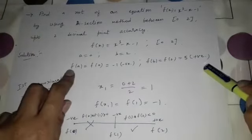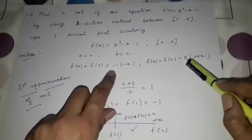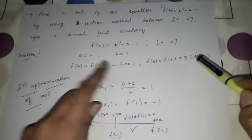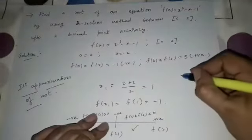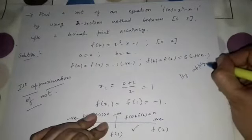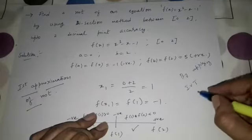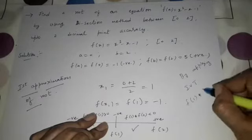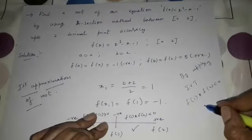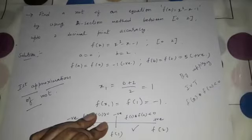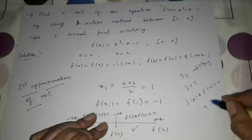f(2) = 5, which is positive. Applying the intermediate value theorem: since f(a) × f(b) = (-1)(5) = -5, which is less than 0, we can confirm that a root exists between 0 and 2.